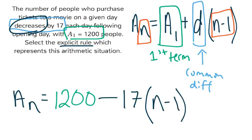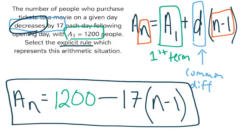And that's how we're going to get the number of people that saw the movie on any given day by taking 1200 minus 17 times n minus 1.